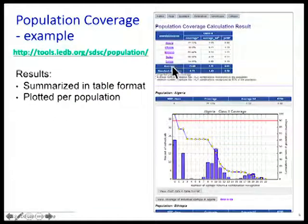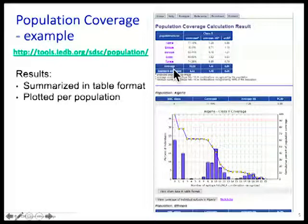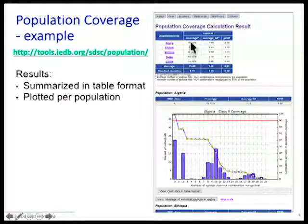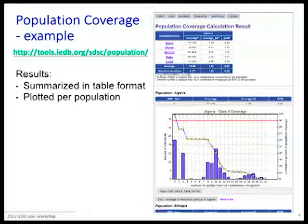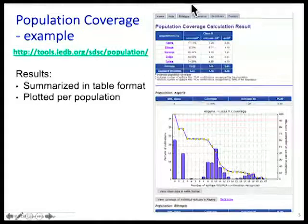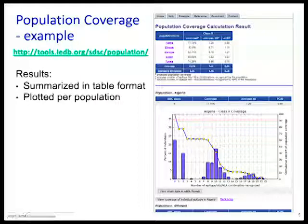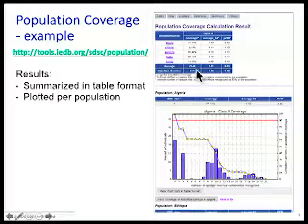What is the output? In table format, with this imaginary example, we selected North Africa. There is data in MHCnet for Algeria, Ethiopia, Morocco, Sudan, and Tunisia. The output variables include coverage — the fraction of that population that would bind or respond to at least one peptide. In this particular case, you see differences because HLA frequencies differ, but on average, 76.9% of individuals bind or respond to at least one epitope.